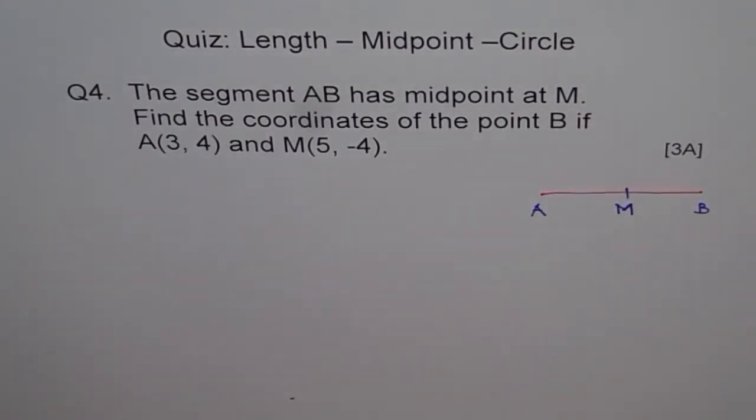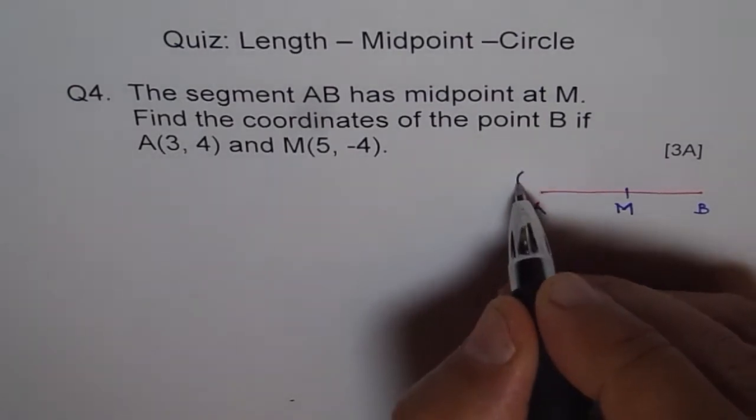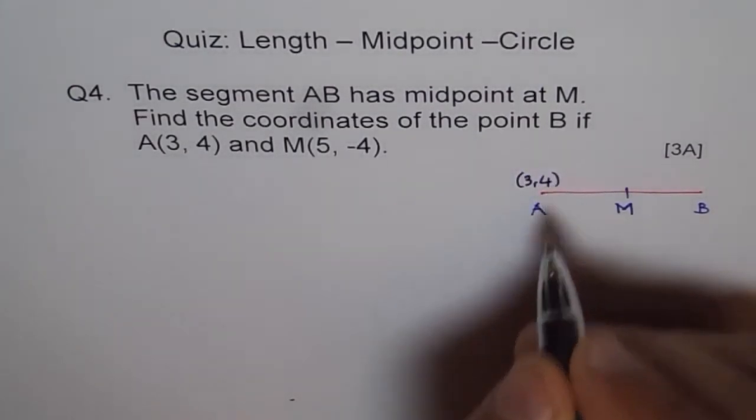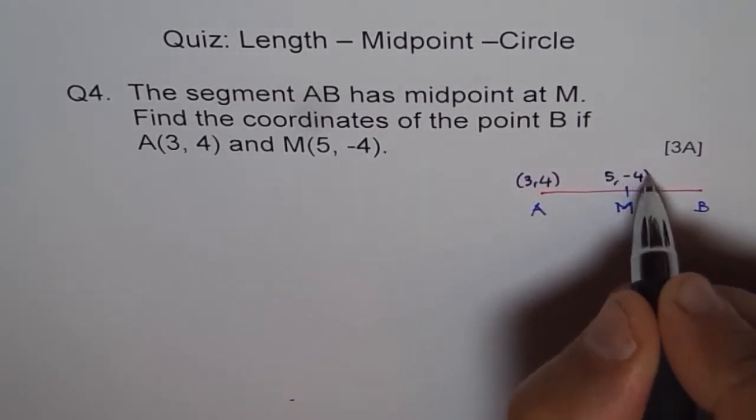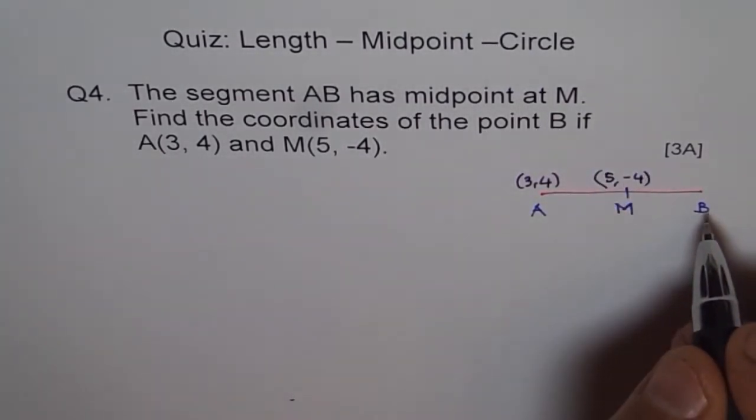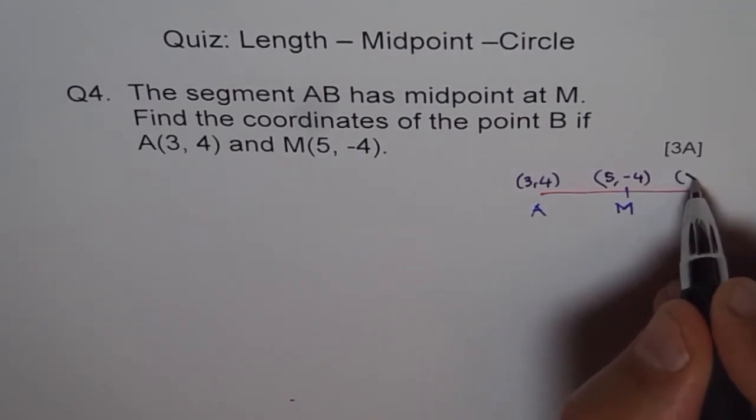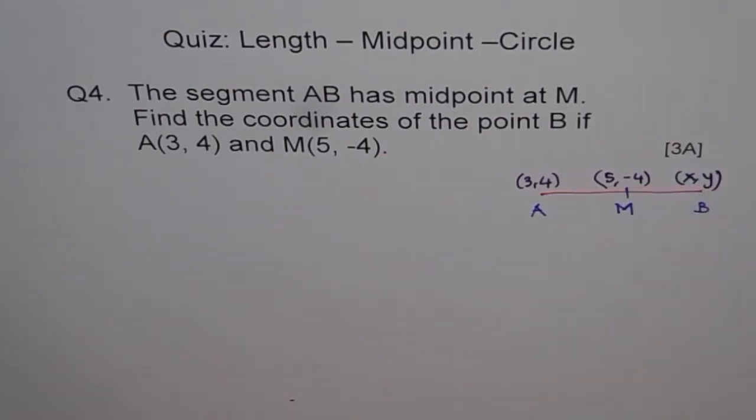Now, what is given to us? We are given that A is (3, 4). So let's write this 3, 4. And M is (5, -4). And we need to find B. So let B be (X, Y). So that is our assumption. Let the point B be X and Y.